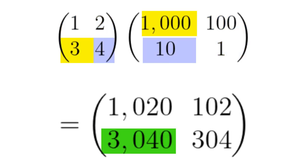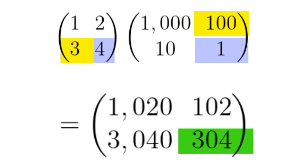Three times a thousand plus four times ten is three thousand forty. Three times a hundred plus four times one is three hundred and four.